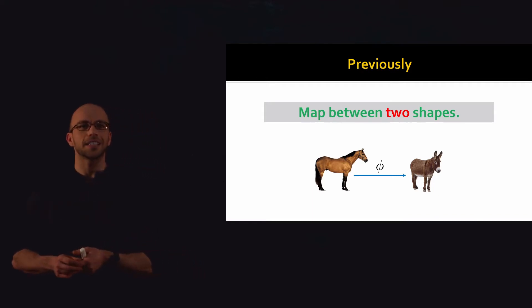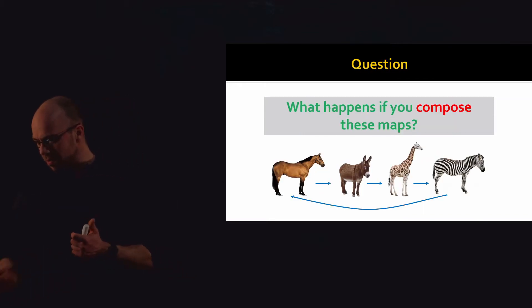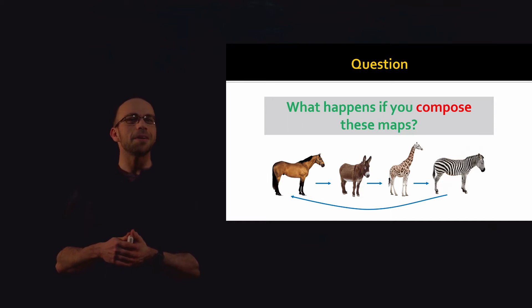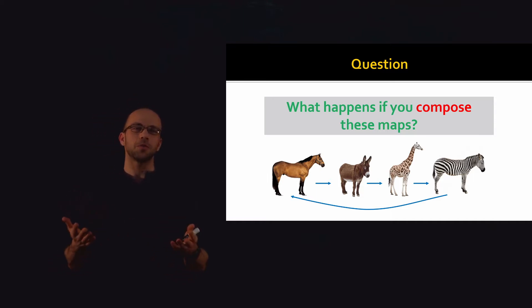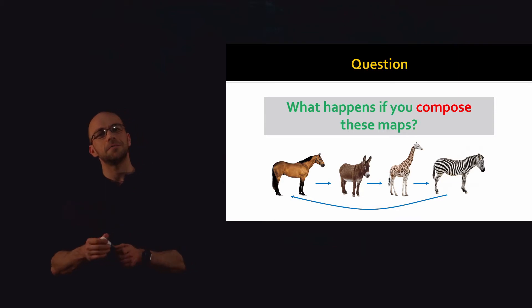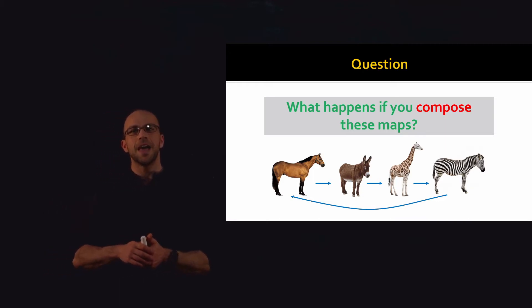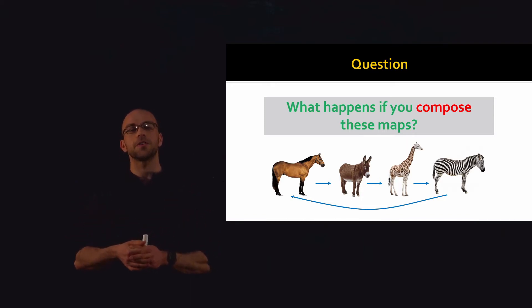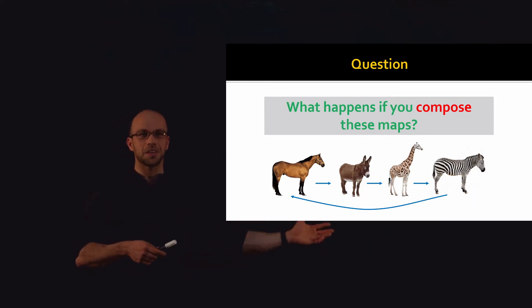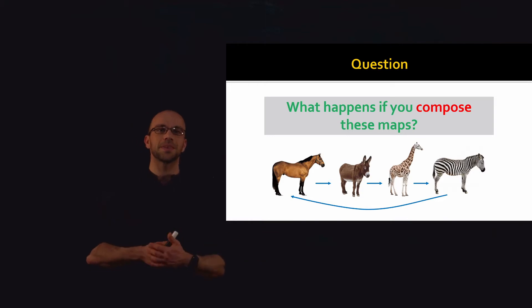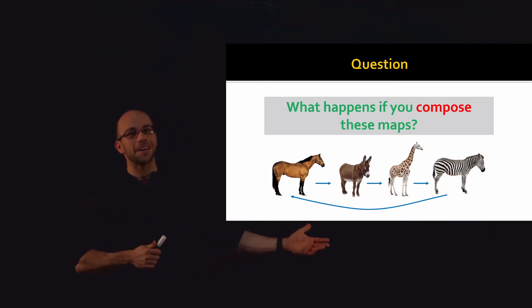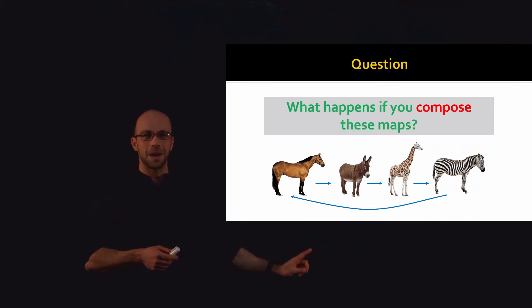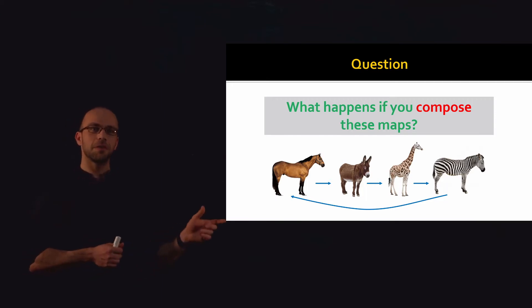Now let's say we have a whole collection of shapes — not just the horse and donkey, but also a giraffe and a zebra. I can take a mapping tool from our previous lecture and apply it to all these different pairs. In particular, I could compute a mapping from horse to donkey, from donkey to giraffe, from giraffe to zebra, and then back. Now that I have more than one map, I can do one really important thing: composition. If I compute the map from horse to donkey and from donkey to giraffe, I have a map from horse to giraffe by composition.